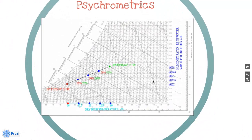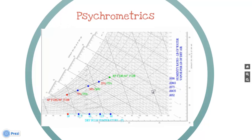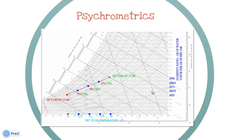Second, psychrometrics. A must-have skill is the ability to navigate a psychrometric chart. The professional engineer should be able to find the properties of air using the chart, calculate mixed conditions, determine dew point, show sensible and latent movements, and so on. A psychrometric chart is very important for the practicing professional HVAC engineer.